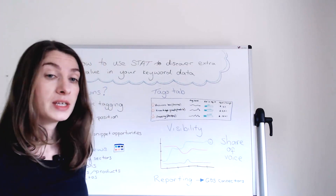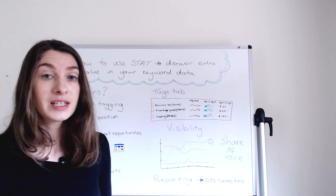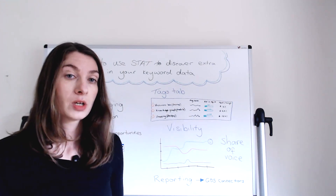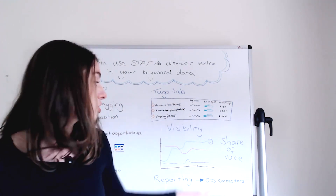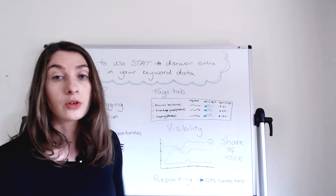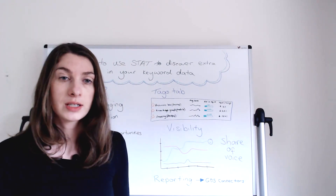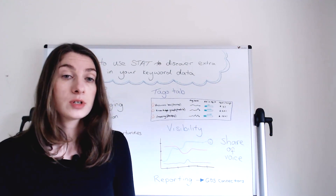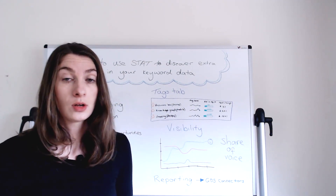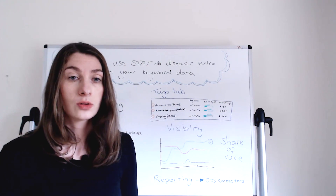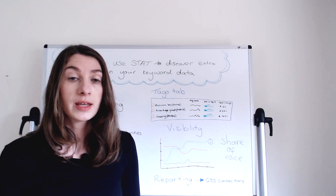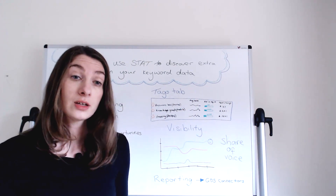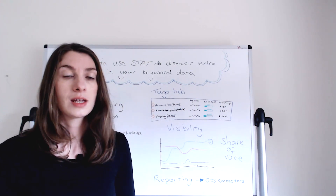Another key piece of information is finding out who you're up against for those keyword sets you've just put together. You can use STAT to view share of voice across that specific set of keyword tags or for that entire market. The share of voice metric used in STAT measures the visibility of a given keyword set on Google. This means you can get invaluable insights such as where competitors are increasing or decreasing in their visibility.